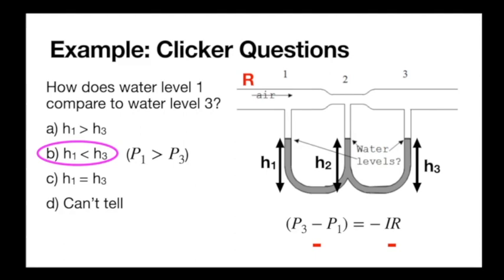If P1 is greater than P3, what happens to the water column height below it? The height at 1 is going to be less than the height at 3. This is the inverted standpipe scenario: in a normal standpipe, higher pressure pushes water up, so height is indicative of pressure. Here we flip it — the air is forcing water down. Point 1 has higher pressure, so it pushes down harder, meaning the water level at 1 is lower. So H1 is less than H3 because pressure at 1 is greater.